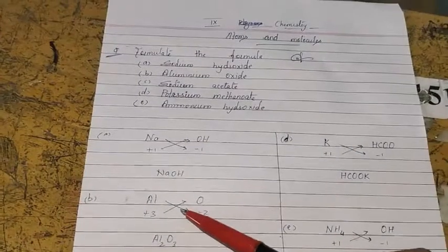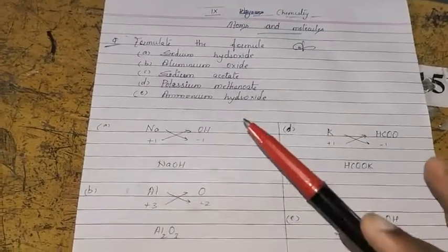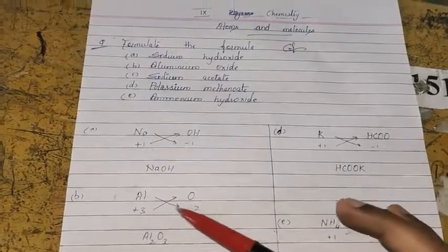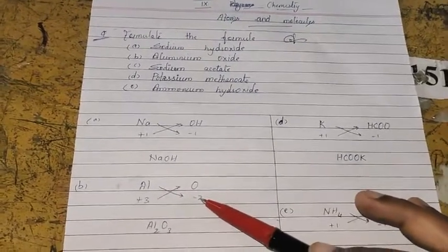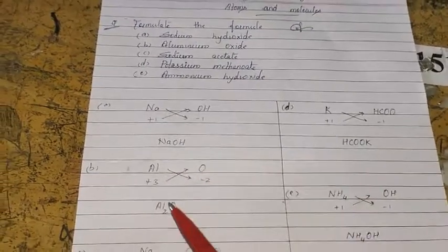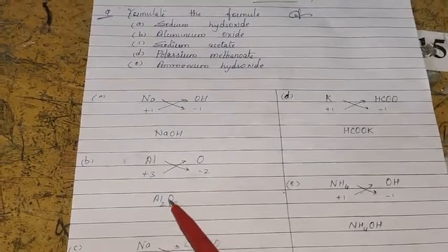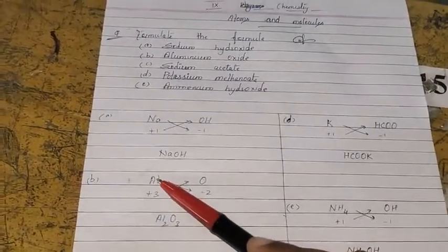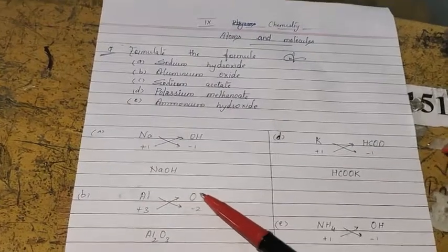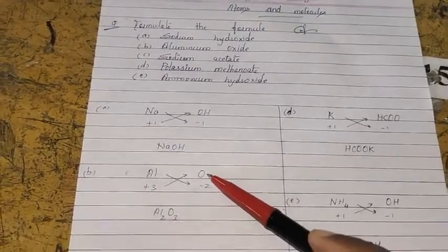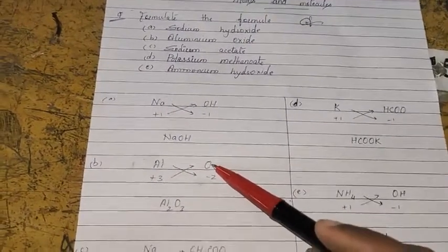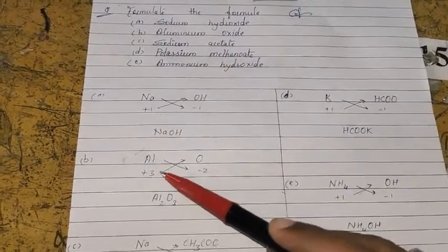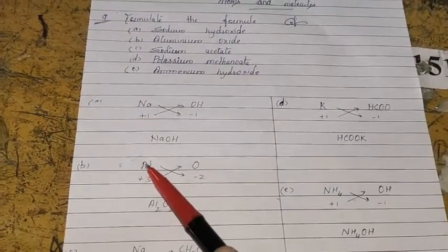For aluminium oxide, there are three steps. In the first step, we put the symbol; in the second step, we put the charge or valency; and in the third step, using the criss-cross method, we write out the formula. For aluminium we write Al, and for oxide we write O. The charge for aluminium is +3 and for oxide is −2. By using criss-cross, we get Al₂O₃.